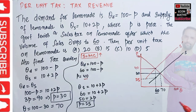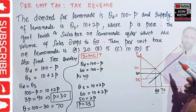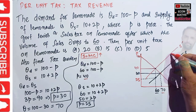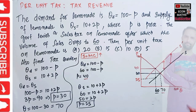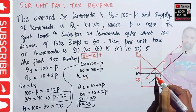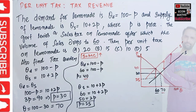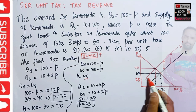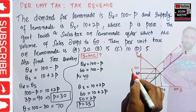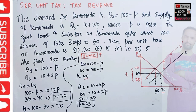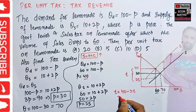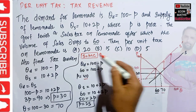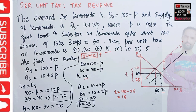Initially, supply and demand intersected at equilibrium quantity of 70 and price of 30. When the per unit tax was imposed, we need to find the vertical distance between the two parallel supply functions. This gap is the per unit tax. At Q = 60, the gap is 40 minus 25, which comes out to be 15. So the per unit tax is 15 dollars.